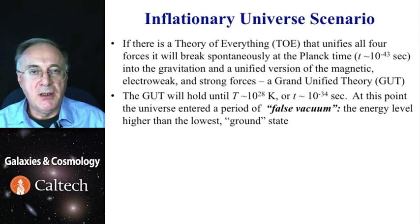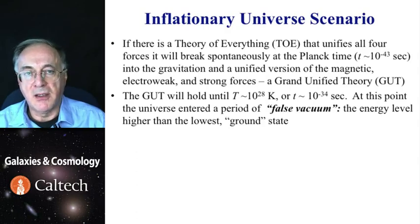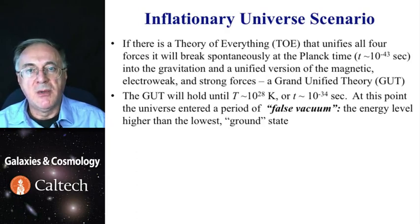What is postulated here is that physical vacuum was not in its actual ground state at the time, but it was in a higher state. Just like in atoms there is a ground state and then electrons can go to higher orbits and have excited states. Also supposedly the universe, the physical vacuum itself, could have been in such a higher state.